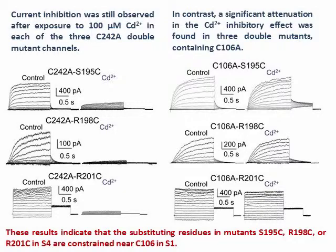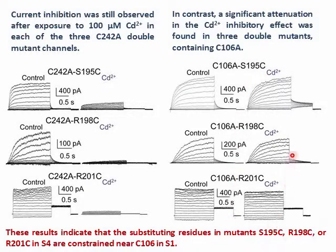To find the residue sufficiently close to coordinate cadmium with the cysteine S4 mutants, we mutated each of the two externally accessible endogenous cysteines into alanine. Double mutations of C106A and C242A with each S4 mutant were examined. Our results indicate that M-current inhibition was still observed after external cadmium exposure in each of the three C242A double mutant channels. In contrast, a significant attenuation of the cadmium inhibitory effect was found in double mutants containing C106A, indicating that cadmium is coordinated by the cysteine S4 mutant and C106 in S1.